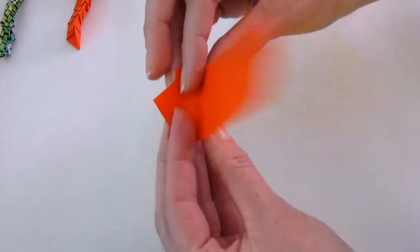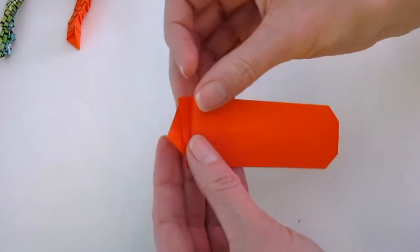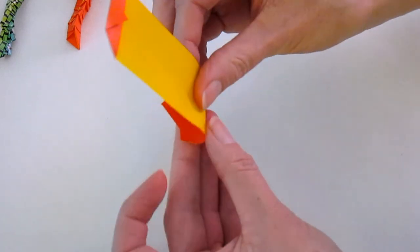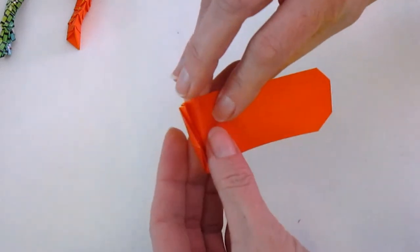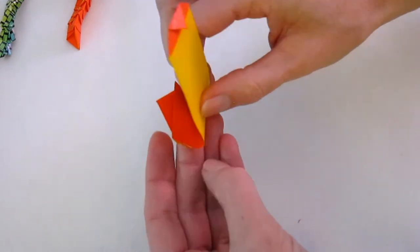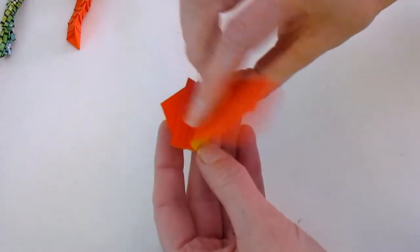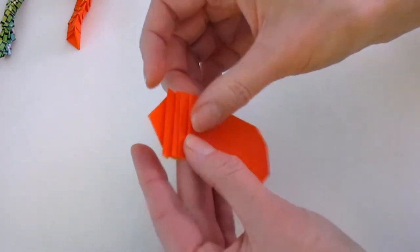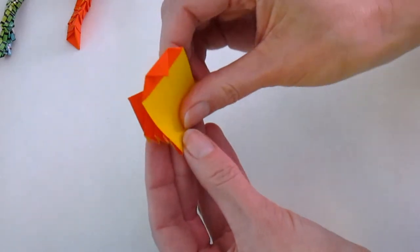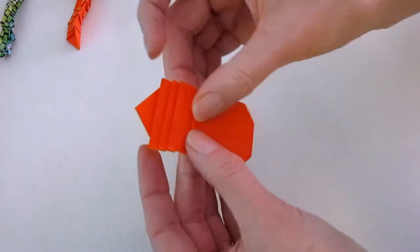And we're going to crease the paper back and forth, and back and forth about ten times. So this takes a little while. You fold it up about a little less than one centimeter, and then fold it back about an eighth of an inch. Fold it up, and back, and up and back.